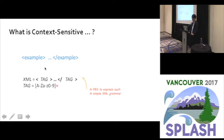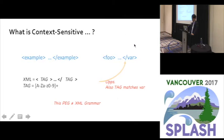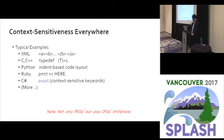The non-terminal 'tags' matches the example. But how about this? This is something wrong — a wrong XML example because the closing tag is different from the opening tag. Unfortunately, this grammar also accepts this language because 'tags' matches the path. So this PEG is not exactly XML grammar. The reason is simple: the second tag depends on the parse result of the first tag.